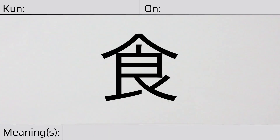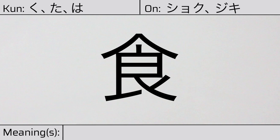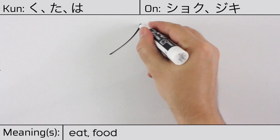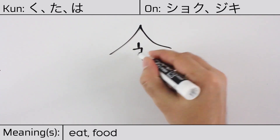Welcome to this lesson on Japanese kanji. Today, we'll be discussing this character. This kanji has kunyomi or Japanese readings of ku, ta, or ha, and it has onyomi or Chinese readings of shoku or jiki. This character has the meanings eat or food. Here is the stroke order.